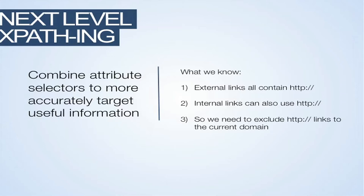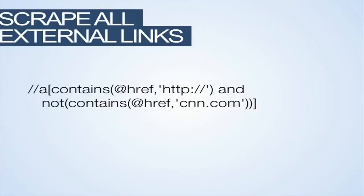The things we know: external links all contain http:// or https:// — but we're not going to worry about that right now. We also know that internal links can contain that too — they could be absolute links instead of relative. So we need to exclude any links that include http:// but point to the current domain we're scraping. This is what that looks like — we can combine stuff. This says: get me all links that contain http:// in the href attribute, but don't contain CNN.com in that same href attribute.